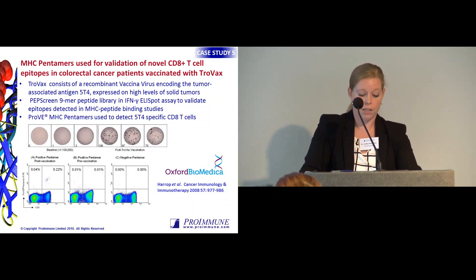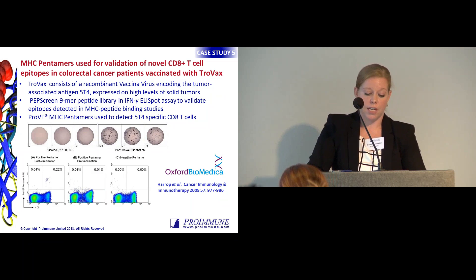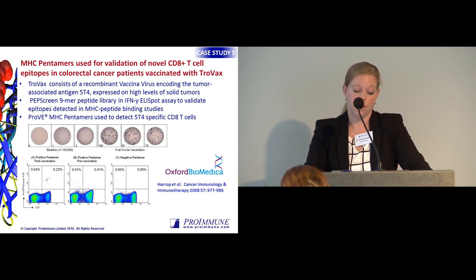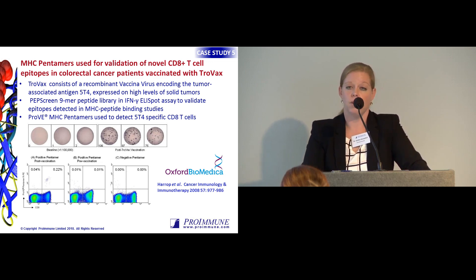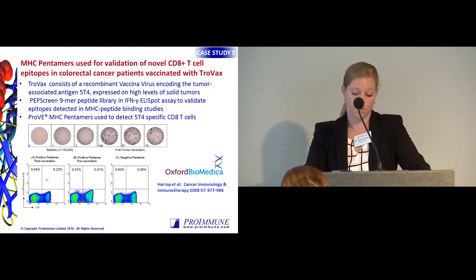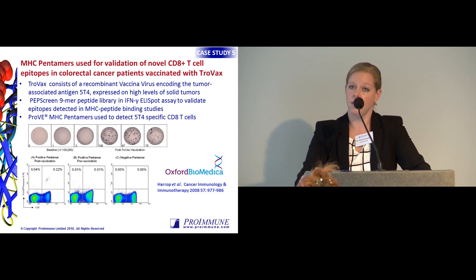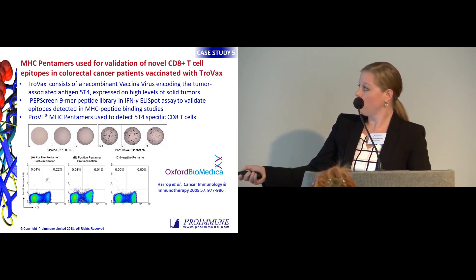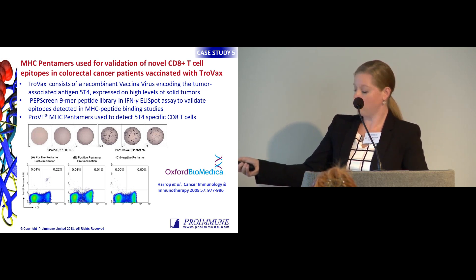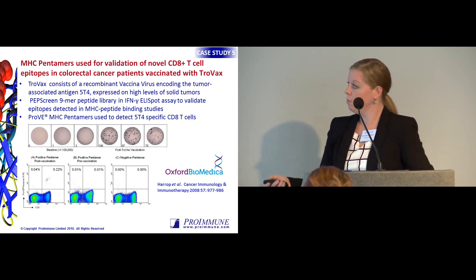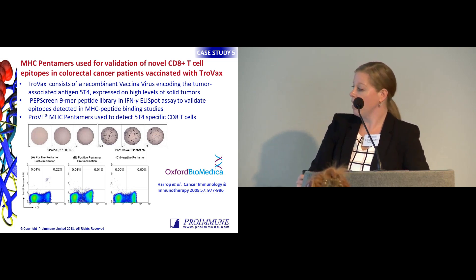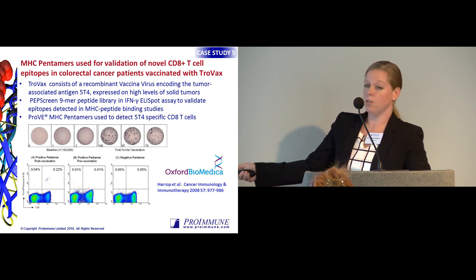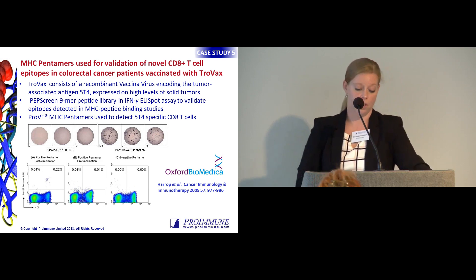The last case study comes from Oxford Biomedica, using pentamers to validate novel CD8 T-cell epitopes in colorectal cancer patients vaccinated with TroVax. TroVax consists of a recombinant vaccinia virus encoding the tumor-associated antigen 5T4, which is expressed at high levels on solid tumors and associated with poor prognosis. They originally identified epitopes using binding assays; we then synthesized a peptide library for ELIspot validation — showing nice responses pre and post vaccination. We also made 10 different pentamers to track 5T4-specific CD8 T-cells in their patient population: 5T4 antigen-specific CD8 T-cells went from 0.01% pre-vaccination up to 0.22% post-vaccination.